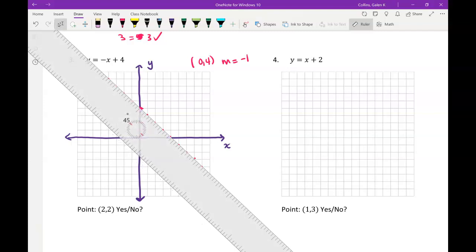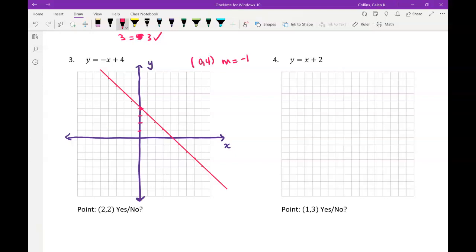And when I graph that line, I want to use a ruler tool for that. It's off just a little bit. Well, I'm not going to redo it. It's hard to use that digital ruler. And then the question is, is the point 2, 2, is that a solution? And it does appear to be, because that point lies on that line.